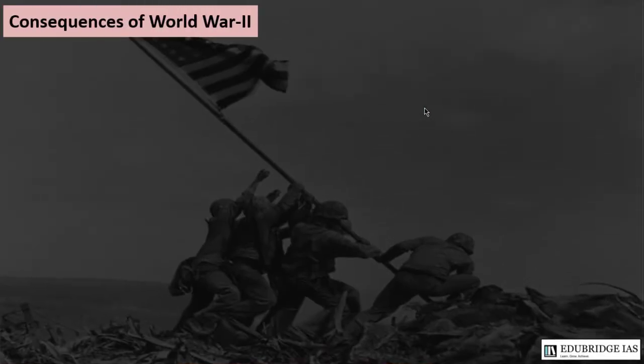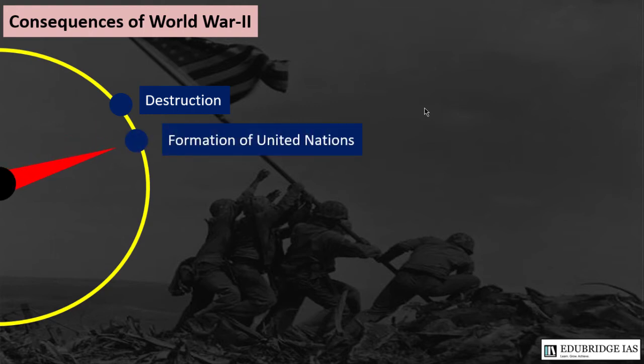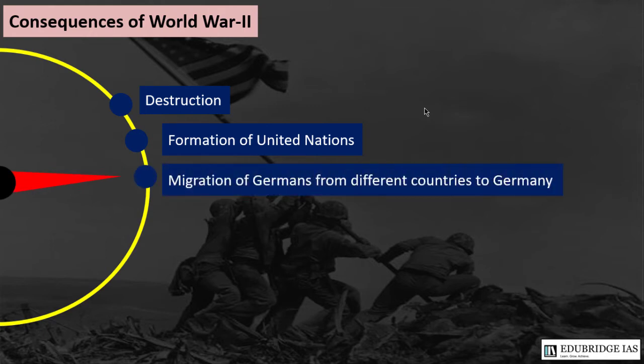Regarding the consequences of World War II: the first was large-scale destruction causing tremendous loss in terms of men and money. The next consequence was the formation of the United Nations, which has been significant in preventing a third world war. Another consequence was the migration of Germans from different countries back to Germany, as many Germans were present in various countries before the war, and Hitler had used this as a pretext to occupy those territories.